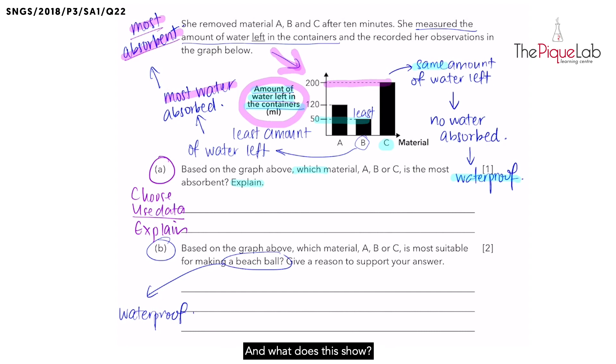And what does this show? This shows us that material C did not absorb any water and is not absorbent. Hence, it is waterproof, which is similar to the beach ball. Therefore, remember to always use CUE for questions that require you to choose.